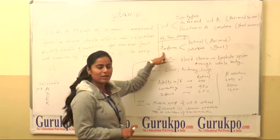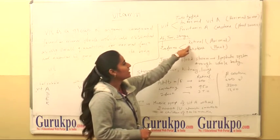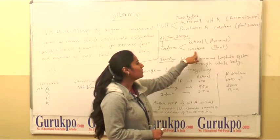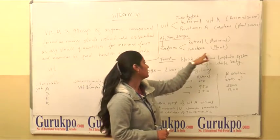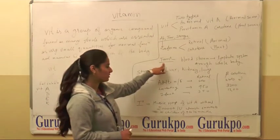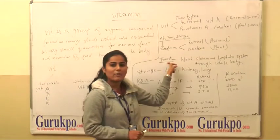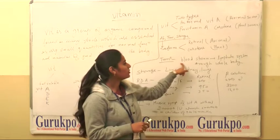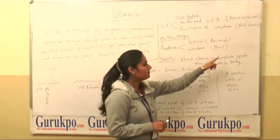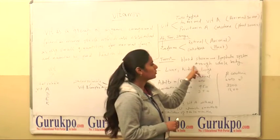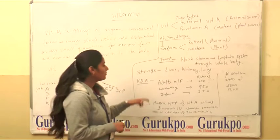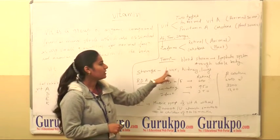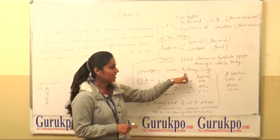Absorption of vitamin A is in two forms: retinol and carotene. Retinol is present in animal sources and carotene is present in plant sources. For transport, vitamin A enters the bloodstream and then travels through the lymphatic system throughout the whole body. The main storage site is the liver, with additional storage in the kidney and lungs.